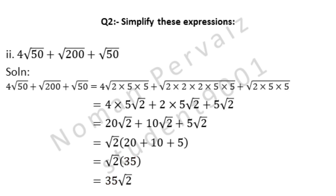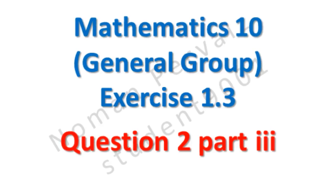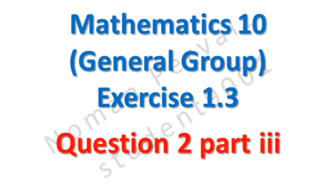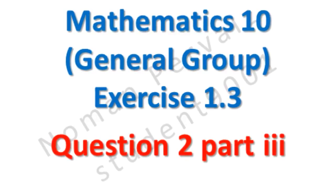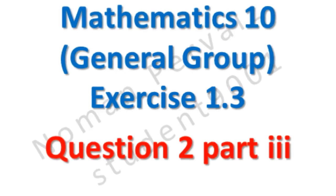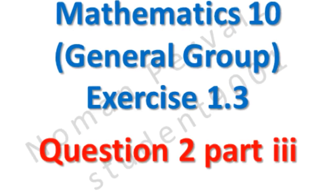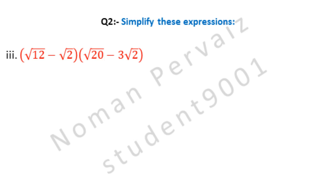Next, we are going to solve part 3 of question number 2 of 10th class math, general group, exercise 1.3. Question 2 is: simplify these expressions. And part 3 is (under root 12 minus under root 2) into (under root 20 minus 3 under root 2). Let's see its solution.